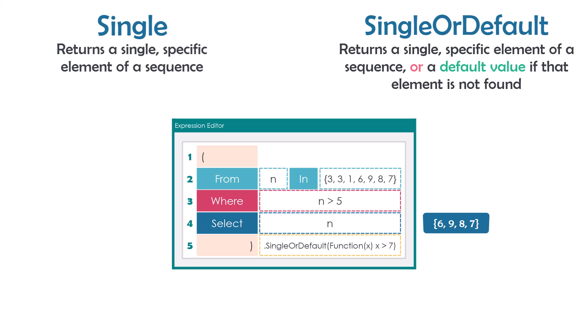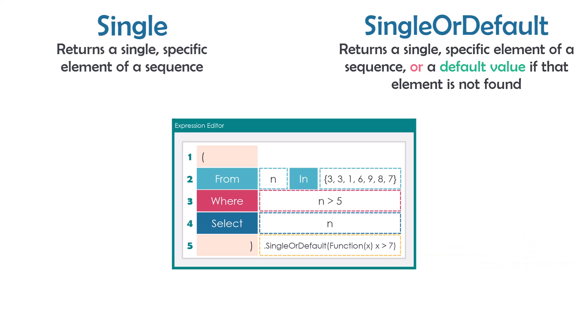If I change the condition to get numbers greater than seven, the result contains two numbers. In this case, an exception of type InvalidOperationException is thrown because the sequence contains more than one element. The same happens with Single operator. It means the sequence should contain only one element to use either operator without any exception. This is how to use both operators with a lambda expression.